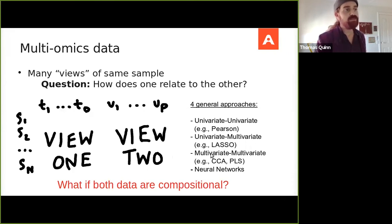You can take a multivariate, multivariate approach where you take one entire data set, and you correlate it with a whole nother data set using a single model, like a canonical correlation analysis or partial least squares regression. These are the types of methods that are implemented in the mixomics package for microbiome data analysis. Or you can take a more elaborate approach to the problem and use neural networks.